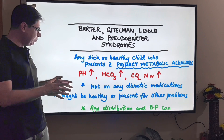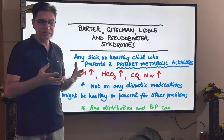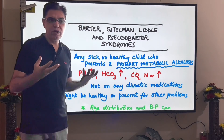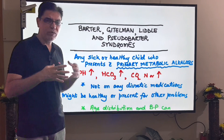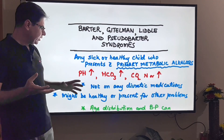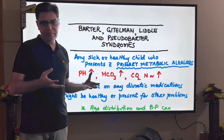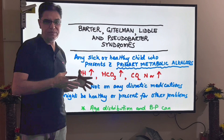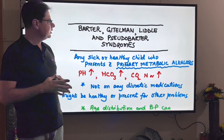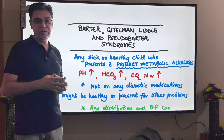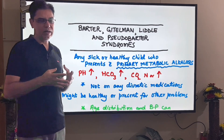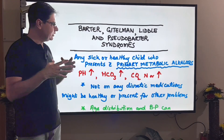These children may be apparently healthy or may present with recurrent infections, failure to thrive, chronic vomiting, or renal stones. Age distribution and blood pressure can also help differentiate: Bartter syndrome presents in neonates and infants, Gitelman in older children, and Liddle syndrome is the only renal tubulopathy that causes hypertension — in the rest, blood pressure is either on the lower side of normal or frankly low.